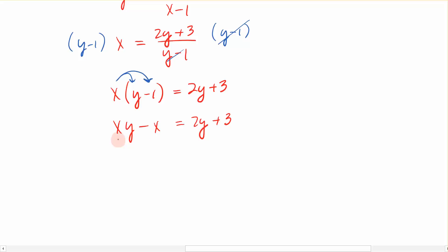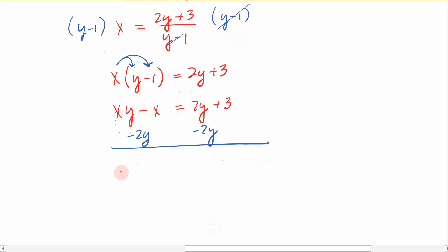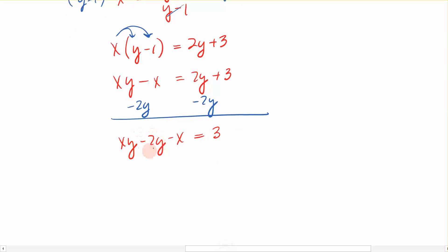So we're going to gather all of the y terms up on the left-hand side. So I'm going to subtract 2y from both sides, which leaves me with xy minus 2y, bring your x down, minus x is equal to just 3. So I have two y terms over here on the left, and I want to get them by themselves by adding x to the right. So I'm going to get y's on the left and everything else on the right. So I have now xy minus 2y equals x plus 3.